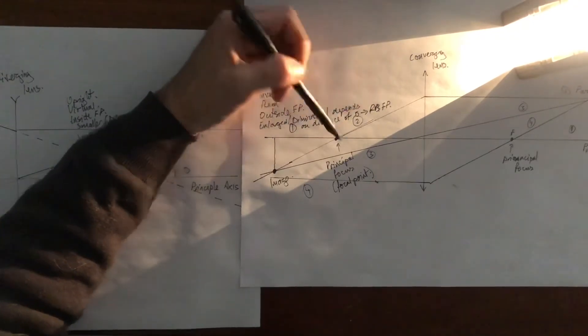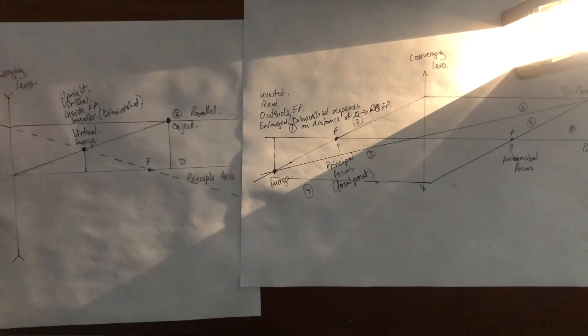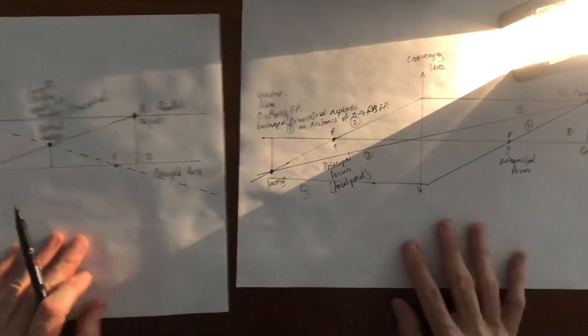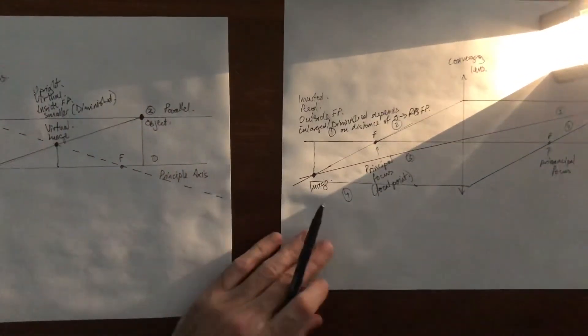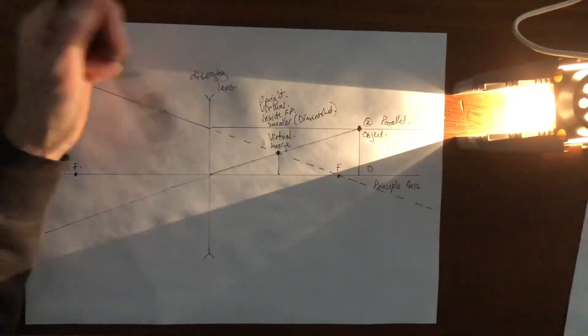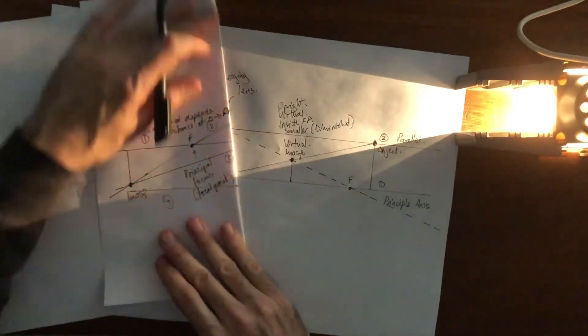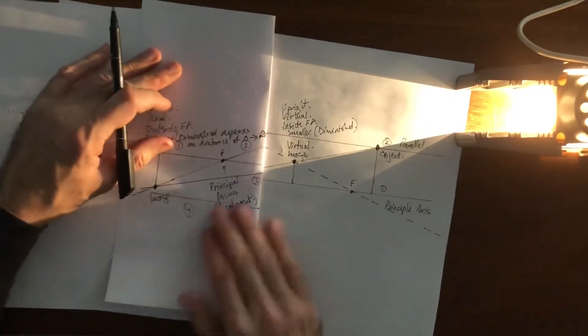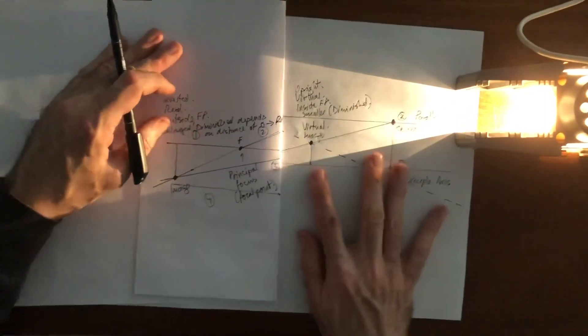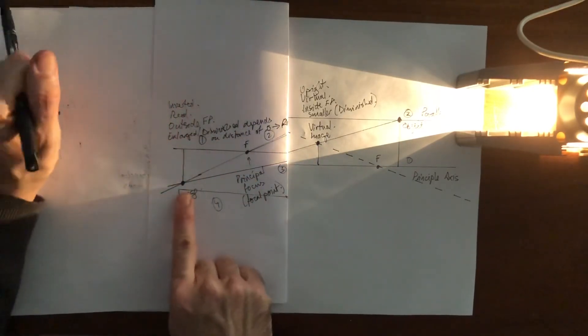That's a subtle point we might talk about later, and it's also in the notes. So that's how you find the properties of an image in a diverging lens, and a comparison of the image properties in a diverging lens versus a converging lens.